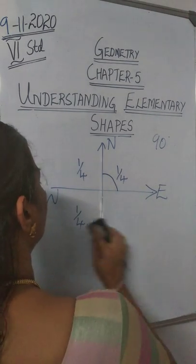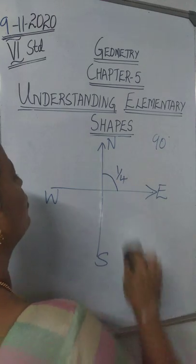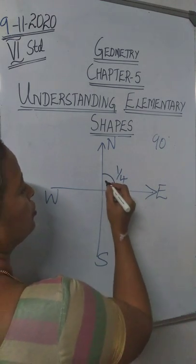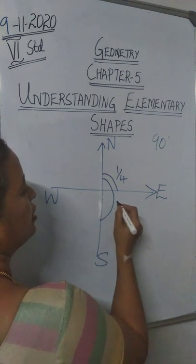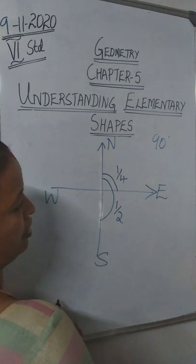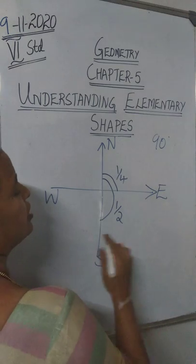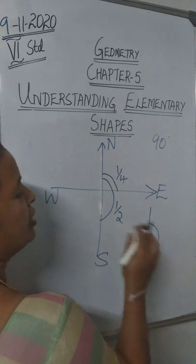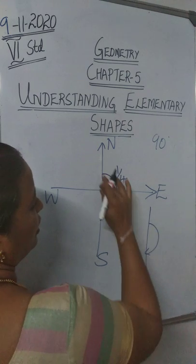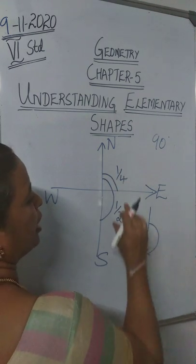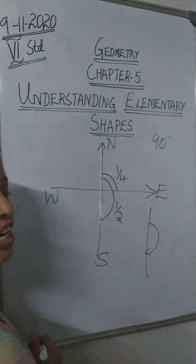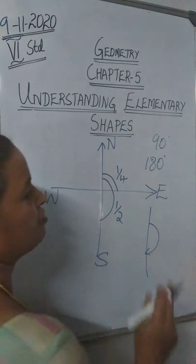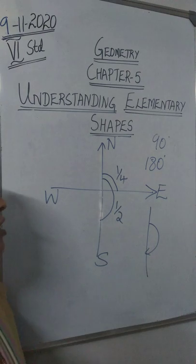From north to south, what is the revolution made? It is half of the revolution. From north to south it has come from here to here — it is a straight angle. Two right angles make a straight angle. So it is making an angle of 180 degrees. Half of the revolution is 180 degrees.